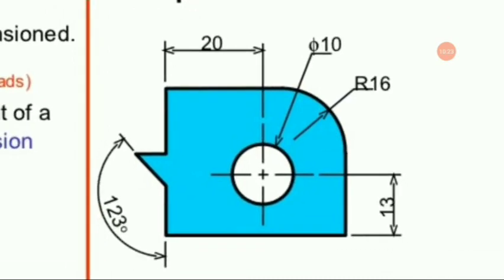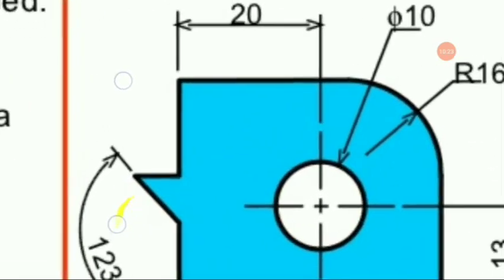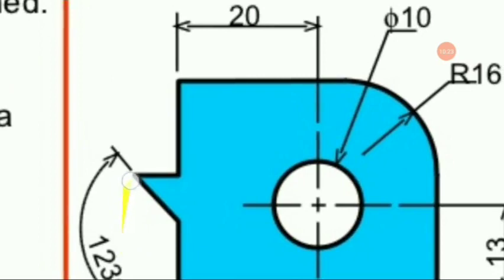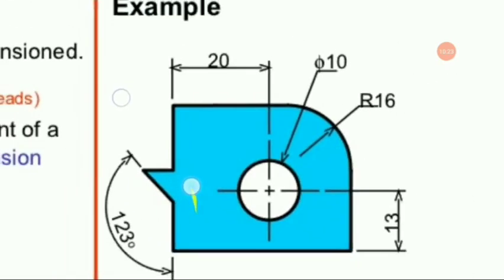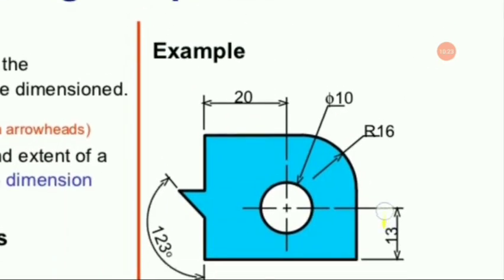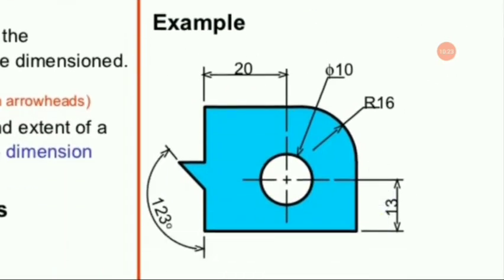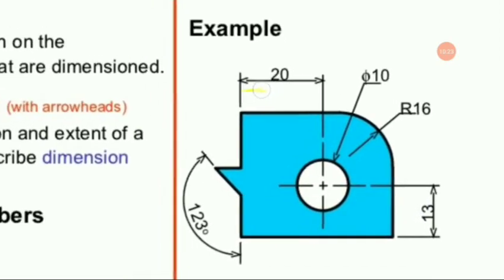The inclined straight lines are known as leader lines. Here you can see one leader line used to denote the diameter of a circle, and another used to denote the radius of a curve. Angular dimensions and linear dimensions are both shown in this picture.